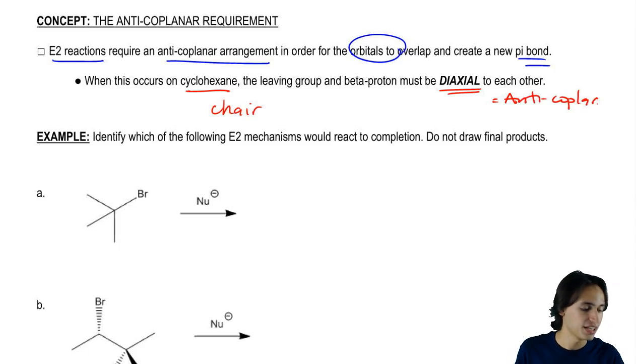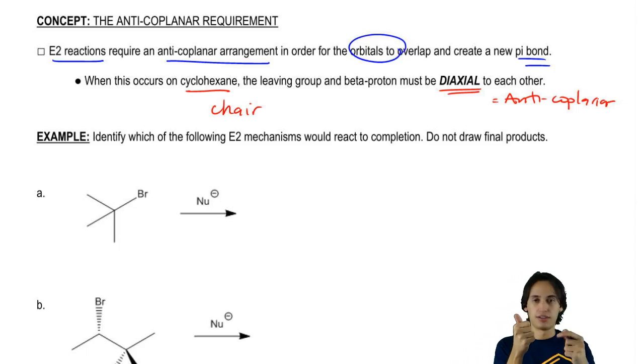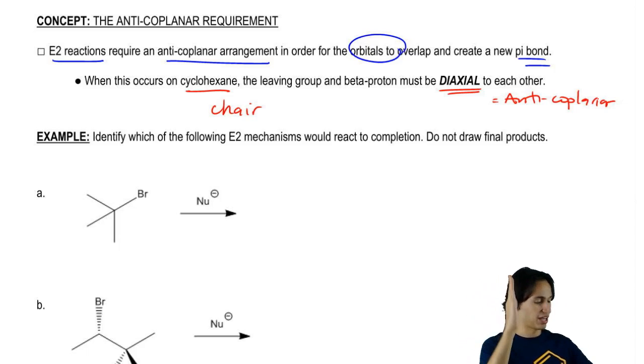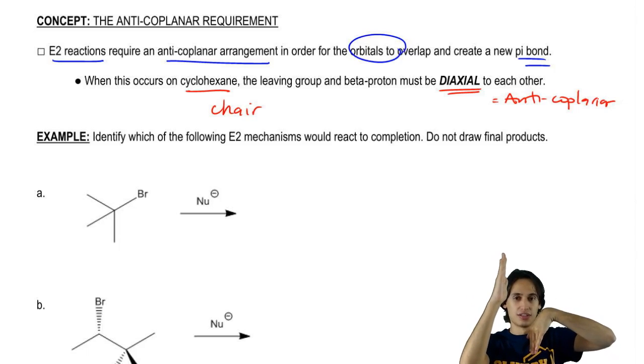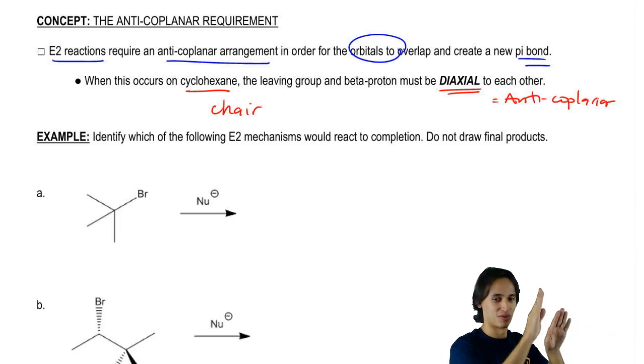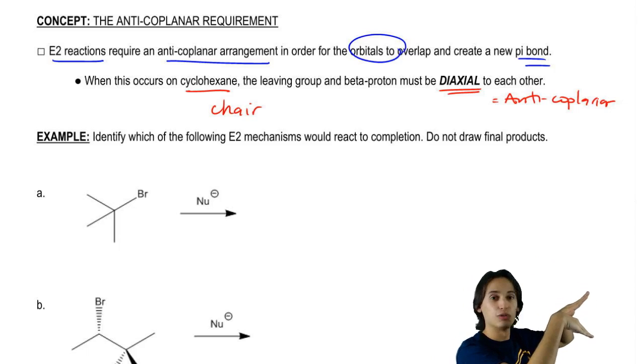Why is that? Why do I say coplanar? Why do I say diaxial? Because the only way that the leaving group and the beta proton can be anti to each other is if they're on adjacent axial positions. The reason is because think about the equatorial positions. The axial positions go like this, the equatorial positions go like this. But let's say that the axial positions are like this, the equatorial positions do this. That's not an anti-arrangement, that's actually like a gauche or something like that.